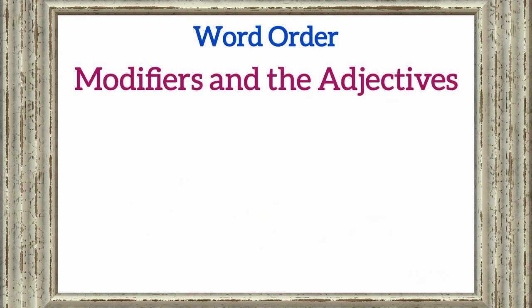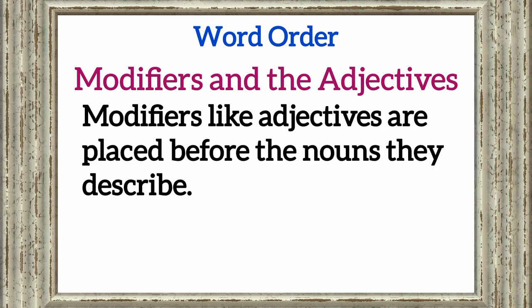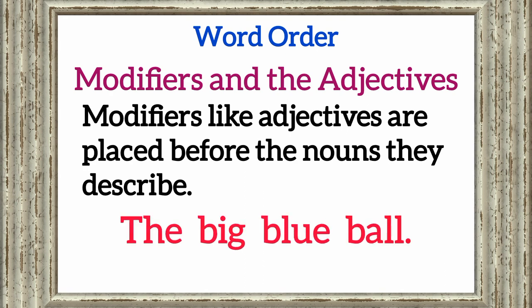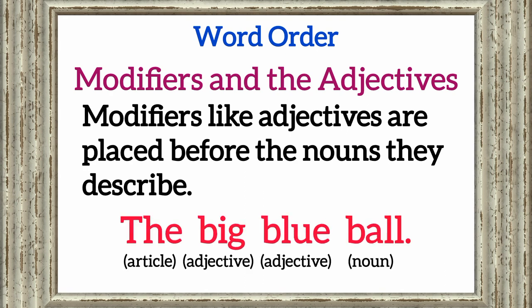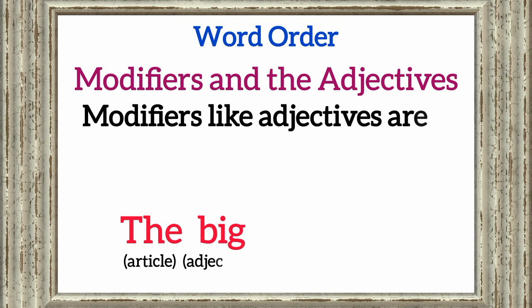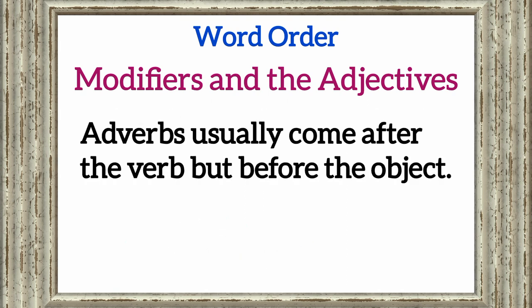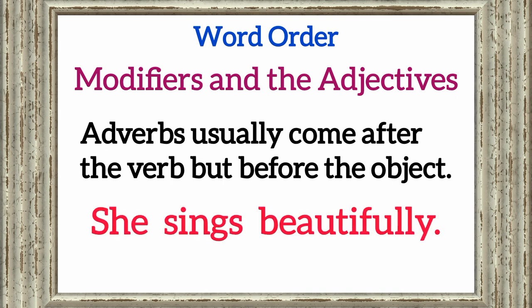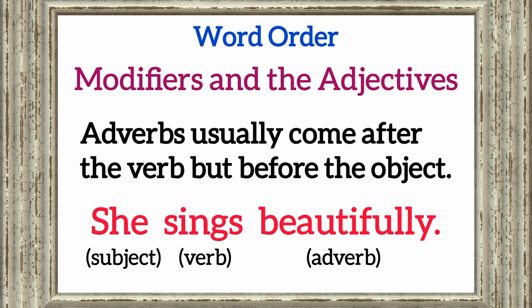Modifiers like adjectives are placed before the nouns they describe. For instance, 'the big blue ball' — 'the' is an article, 'big' is an adjective, 'blue' is an adjective, and 'ball' is a noun. Adverbs usually come after the verb but before the object. For example, 'she sings beautifully' — 'she' is the subject, 'sings' is the verb, and 'beautifully' is an adverb.